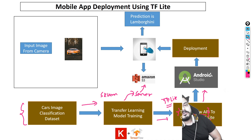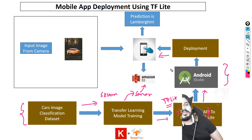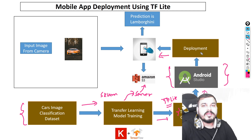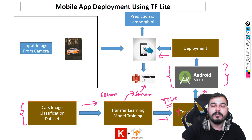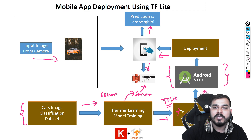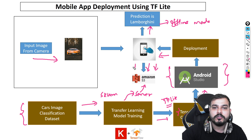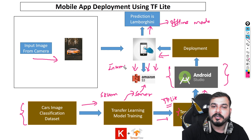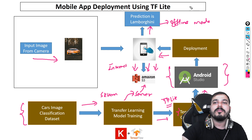After conversion, we pass the TFLite model to Android Studio, which is responsible for deploying it to your mobile phone. For iOS you would use a different tool, but for Android phones you use Android Studio. Once deployment is done, we take the input from the camera, do the prediction — for example, the model says it's a Lamborghini — and the output can be shown in offline mode. If the app wants to store the image in S3, it will need an internet connection for that step.